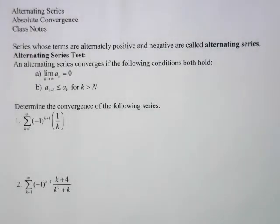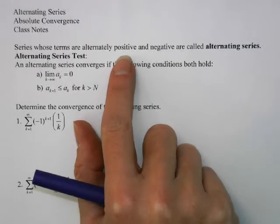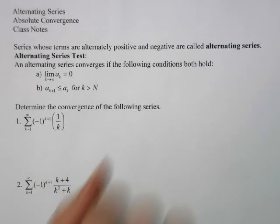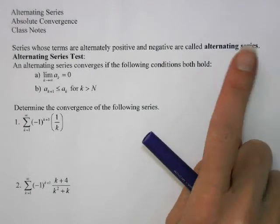Today's lesson is on the alternating series test, and we're going to talk about absolute convergence versus conditional convergence. The alternating series test is a pretty simple one to run, but it has to be on an alternating series. An alternating series is one where terms alternate between positive and negative.